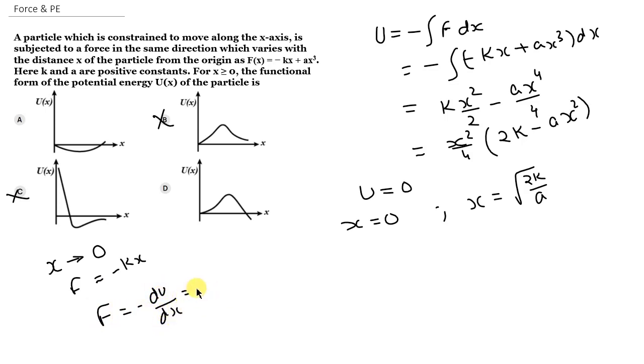dU by dx at x equals zero is equal to minus k times zero, which equals zero. So dU by dx equals the slope. If x equals zero, then the slope is zero.